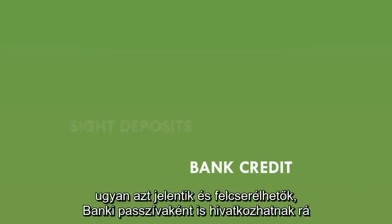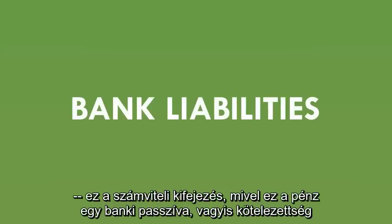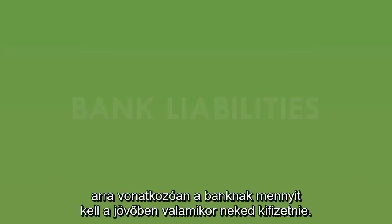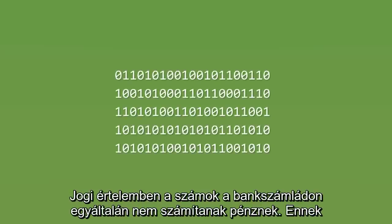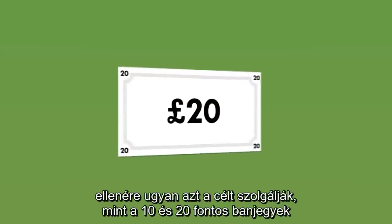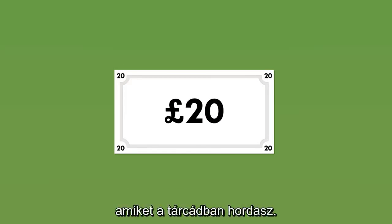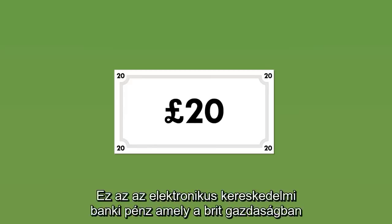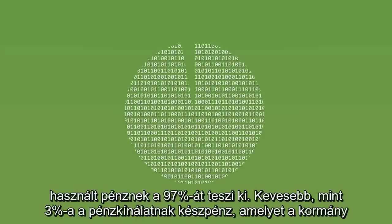These terms all pretty much mean the same thing and are used interchangeably. They might also be referred to as bank liabilities — the accounting term — because this money is a liability of the bank to you; it's what the bank needs to repay you at some point in the future. In a legal sense, the numbers in your account aren't really money at all, but despite that, they serve exactly the same purpose as the £10 and £20 notes you might hold in your wallet. It's this type of electronic bank deposit money that now makes up over 97% of all the money used in the UK economy. Less than 3% of the money supply is cash created by the government.